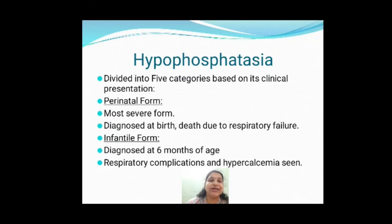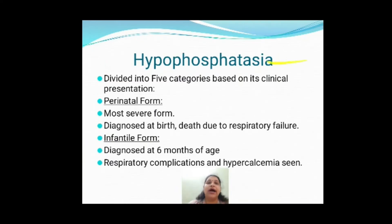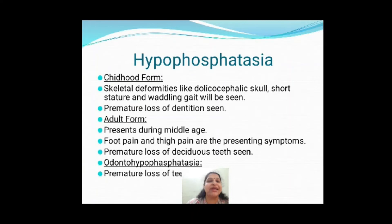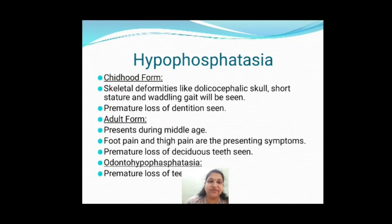The perinatal form manifests at birth and babies will not survive — death occurs due to respiratory failure. The infantile form is diagnosed at 6 months of age and again has respiratory complications. The childhood form presents with skeletal deformities, short stature, dolicocephalic skull, waddling gait, and premature loss of dentition. The adult form manifests during middle age with foot pain and thigh pain, and premature loss of deciduous teeth is also seen.